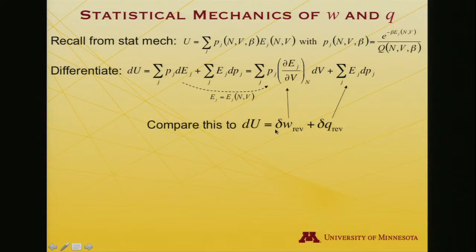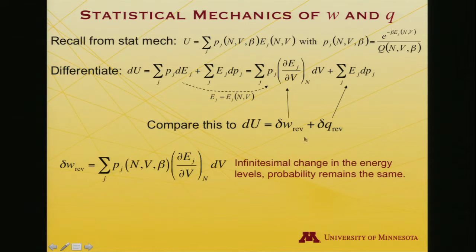Well, I've got delta W reversible and delta Q reversible. These two have a relationship because delta W reversible, what does this mean? It's an infinitesimal change in the energy levels with probability remaining the same times a dV. That's why I want to equate this with work. It's because it's multiplying a dV term. And the differential work is associated with a pressure times a differential volume. Meanwhile, the other piece of the term, just by what's left in the first law, must be associated with differential heat.